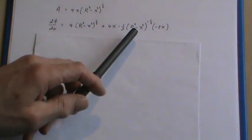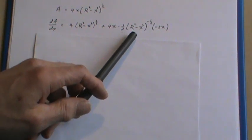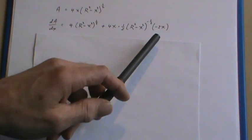The half comes down. This lowers to negative a half. And since R is a constant, the derivative of the inside is negative 2x.